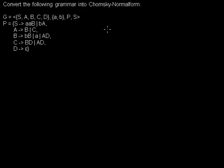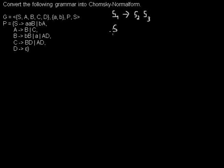I'd like to show an example on how to convert a grammar into Chomsky Normal Form. In Chomsky Normal Form, only specific types of rules are allowed. One type has a non-terminal on the left-hand side and exactly two non-terminals on the right-hand side. It's not allowed to have more or fewer than two. The other allowed type has one non-terminal on the left and a single terminal on the right — not more, not less.